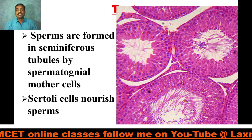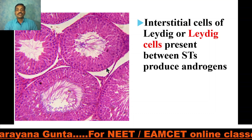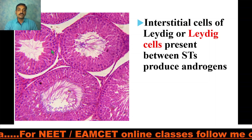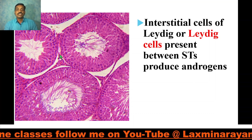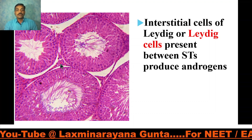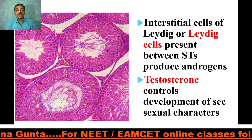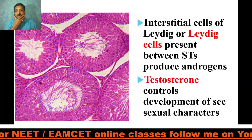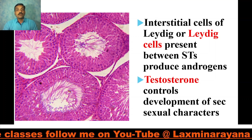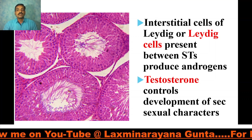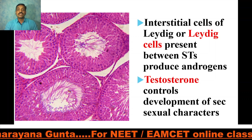Interstitial cells of Leydig, or Leydig cells, are present between the seminiferous tubules and they produce androgens. The most important androgen is testosterone, which controls the development of secondary sexual characters in human males — including development of beard and mustaches, hair in groins and underarms, low pitch voice, and powerful breast musculature. These secondary sexual characters are observed after the age of 13 or 14, because of testosterone.